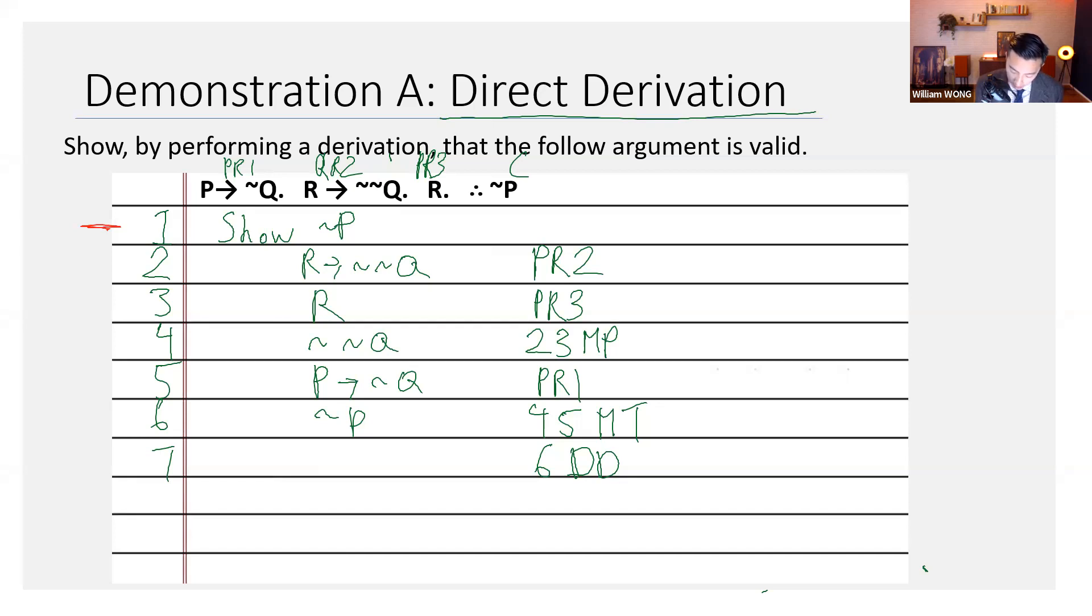But after you write 6DD, you have to, number one, cross out the show line of what you've shown, and then box it off.